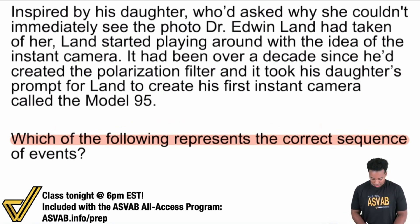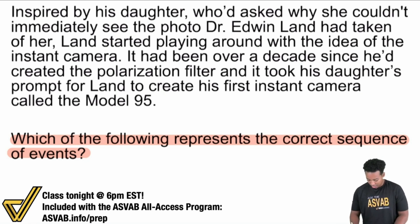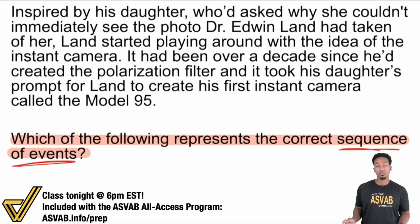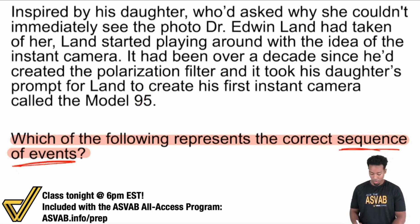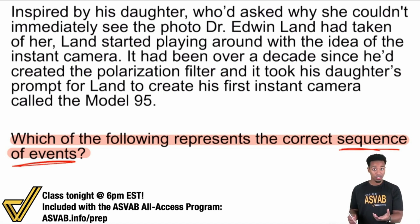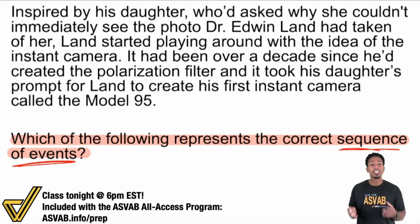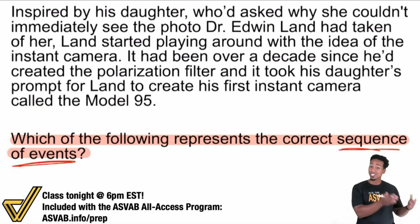The question reads: which of the following represents the correct sequence of events? That's the question type we're dealing with here — sequence of events. This is a common type of question on the ASVAB paragraph comprehension. The way you want to handle it: you will actually not start with the passage after reading the question. What you're going to do is use the answer choices to your advantage. Why? Because it's a sequence of events — this is super logical. It's basically asking: what happens first, second, third, fourth, and so on.